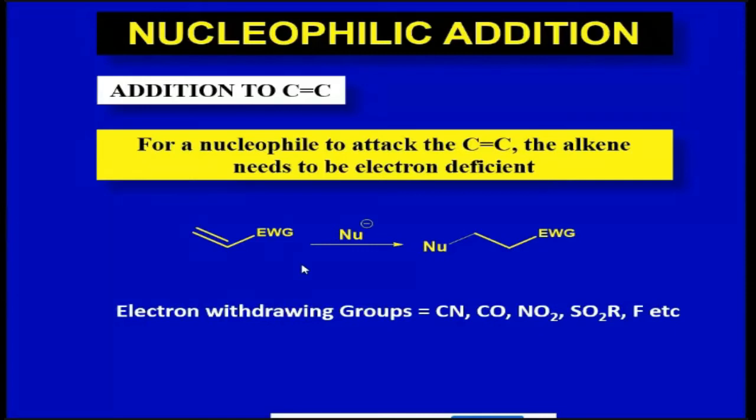Addition to carbon-carbon double bonds usually is electrophilic, but nucleophilic addition is also possible. For a nucleophile to interact with the double bond, the double bond needs to be sufficiently electron-deficient. You can do that by incorporating an electron withdrawing group next to the double bond.